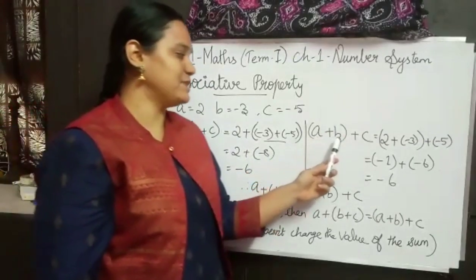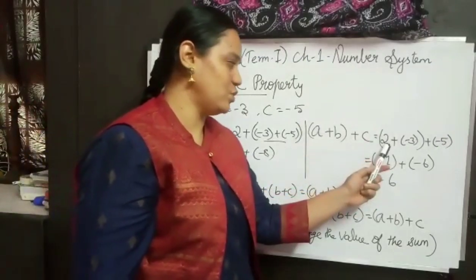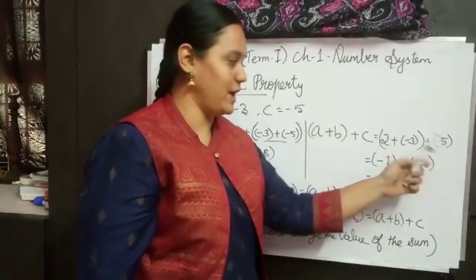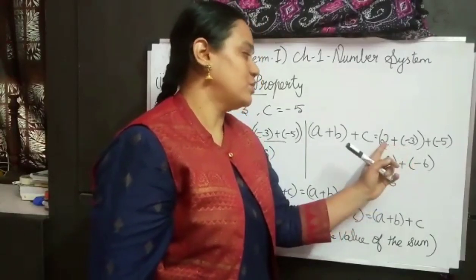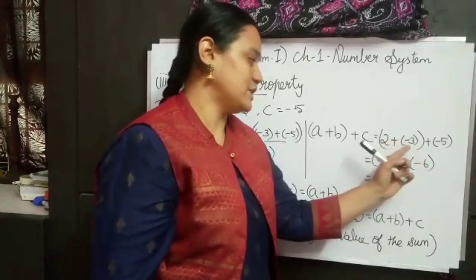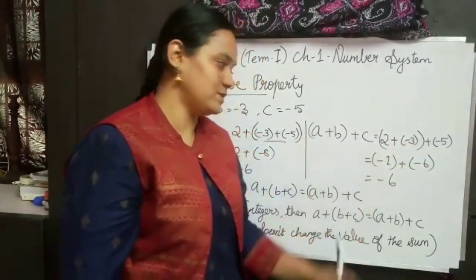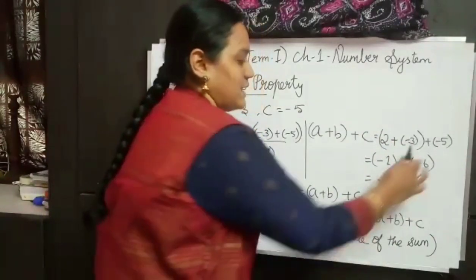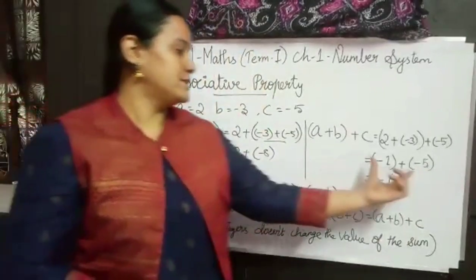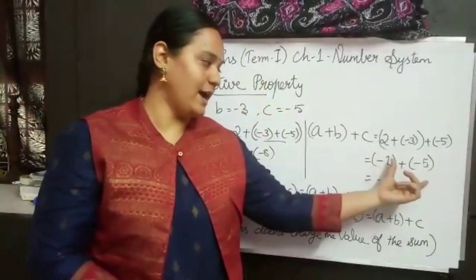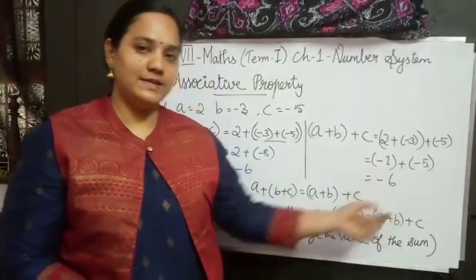Now for (a plus b) plus c, I substitute the values: a as 2, b as minus 3, and c as minus 5. Solving inside the bracket first: 2 plus minus 3, different sign, we subtract, getting 1, and the greatest number sign is minus, so minus 1. Then minus 1 plus minus 5 — same sign, so we add, getting 6, and greatest number sign is minus. So the answer is minus 6.